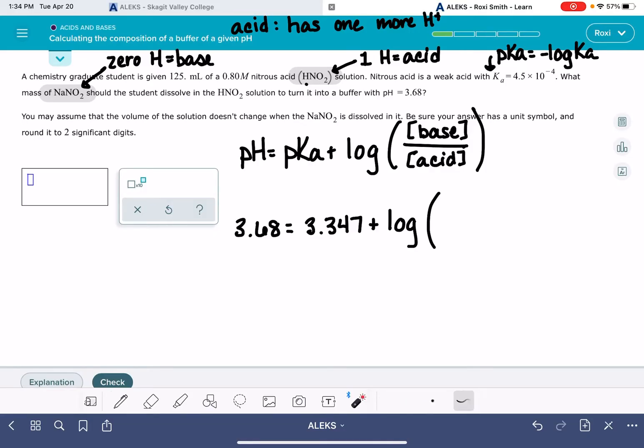So the base, NaNO2, this is actually what we don't know. We don't know anything about this base. The problem is asking us to make that calculation. What mass of the base do we need? The acid, we do know its molarity is 0.8. So we'll plug that into this equation right here.